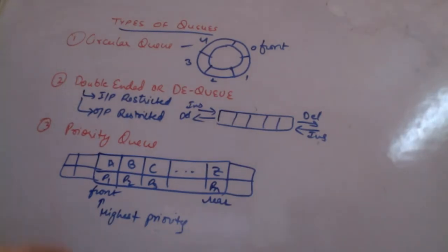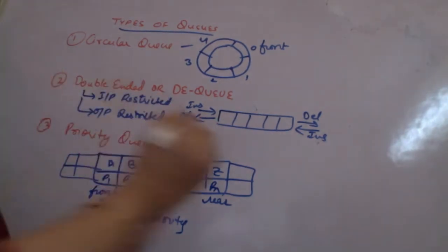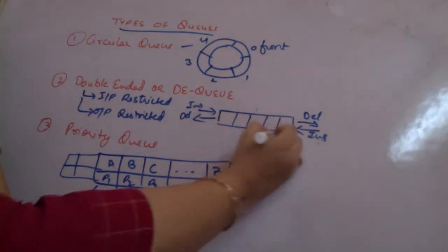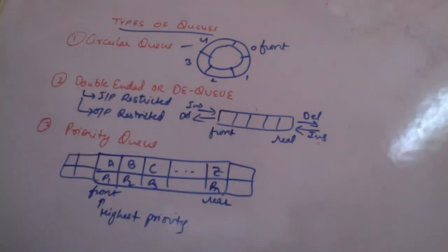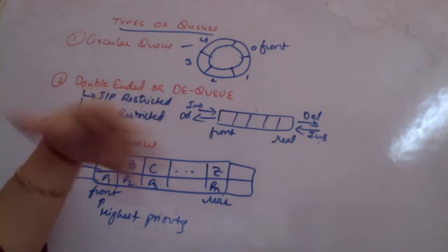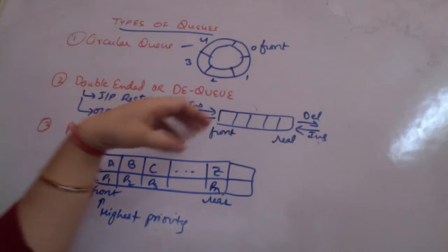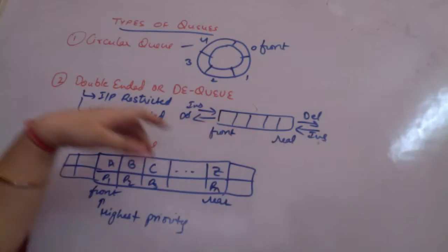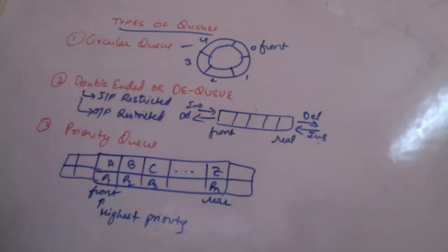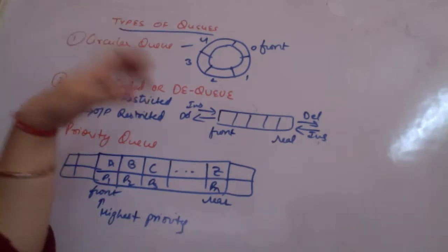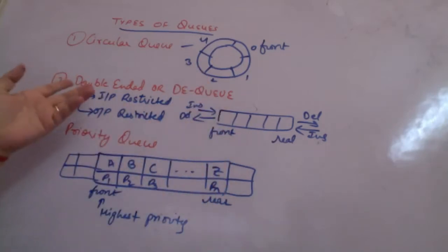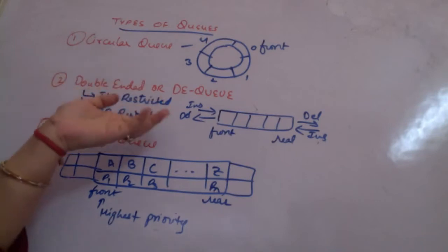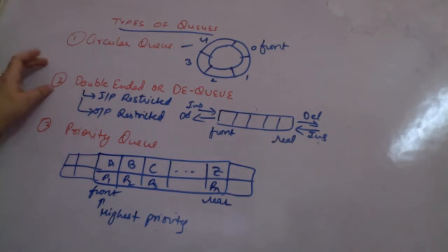There are also double-ended queues. Normally insertion happens only at the rear end and deletion only from the front end, but double-ended queues are either input restricted or output restricted. If it is input restricted, input can happen only from the rear end but deletion can happen from either end. If it is output restricted, insertion can happen from both ends but deletion can happen only from the front. If neither restriction applies, it becomes a normal list, not a queue.